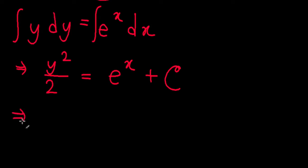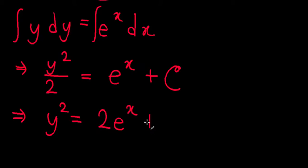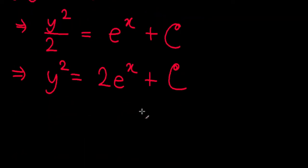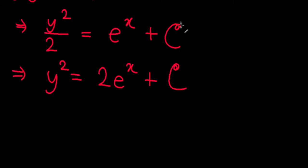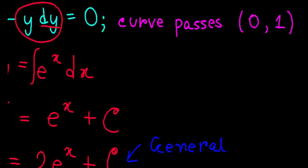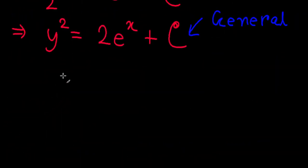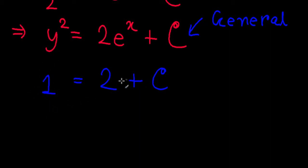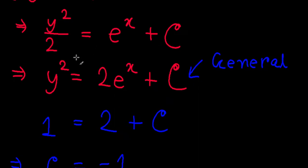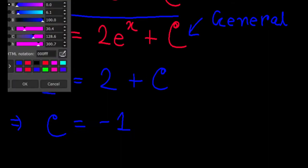Now we integrate both sides. The left side gives y squared over 2, and the right side gives e to the power x plus some constant c. Multiplying by 2, we get y squared equals 2e to the power x plus c. This is the general solution. Now we apply the initial condition: when x equals 0, y equals 1.